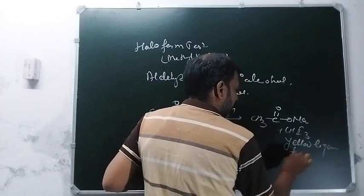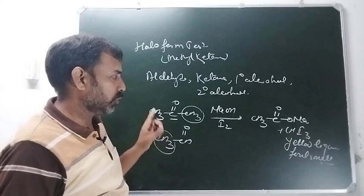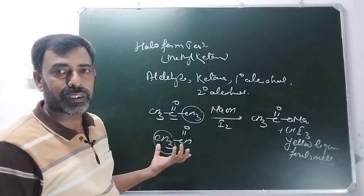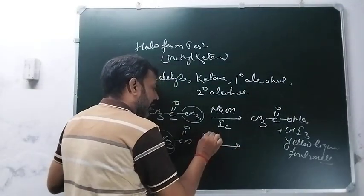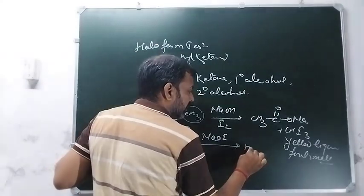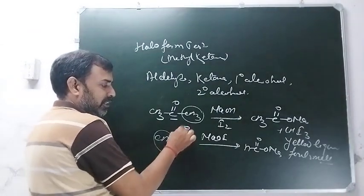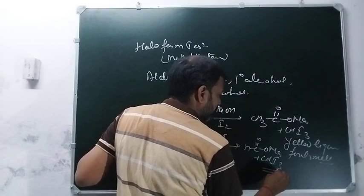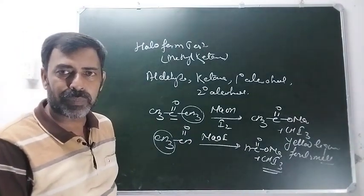Iodoform एक yellow liquid having foul smell होता है। अगर ethanol देखें - यह भी methyl ketone की category में आता है। इसे भी treat करें NaOI से - तब भी carbon bond टूटेगा और iodoform बनेगा। बहुत बार इसे yellow iodoform test के नाम से भी जानते हैं।